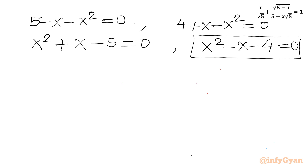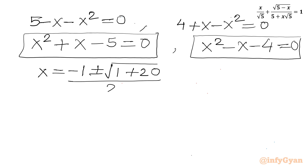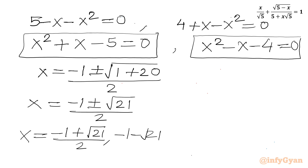Applying the quadratic formula to the first equation x squared plus x minus 5 equals 0: x equals minus b plus or minus square root of the discriminant, over 2. Here b equals 1, so x equals minus 1 plus or minus root 21, over 2. This gives two solutions: x equals minus 1 plus root 21 over 2, and x equals minus 1 minus root 21 over 2.